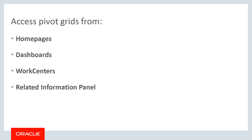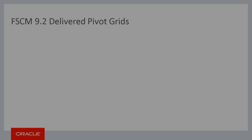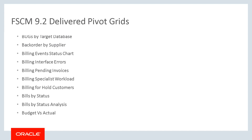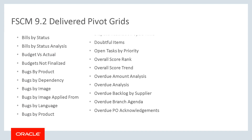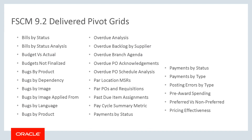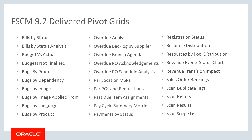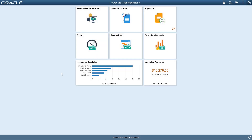Related actions and related content come from PeopleSoft Portal pages. PeopleSoft FSCM 9.2 delivers many pivot grids enabling you to aggregate data and show new insights in just a few clicks. In this video, we'll take a look at a few billing metrics. These pivot grids are also available for mobile devices.